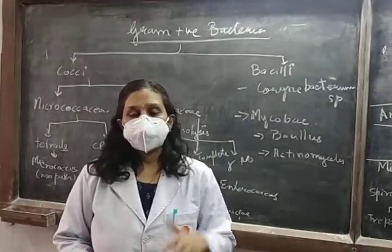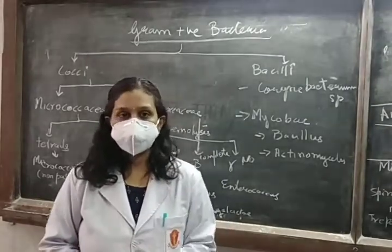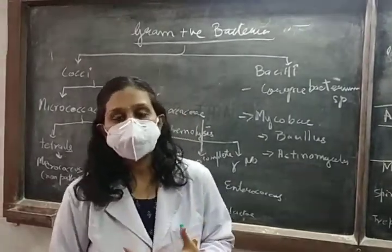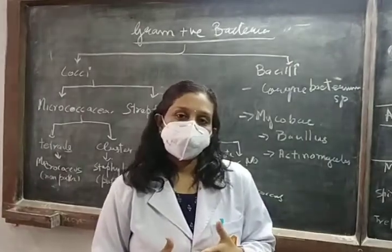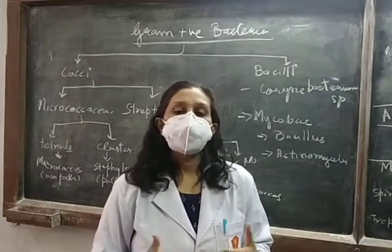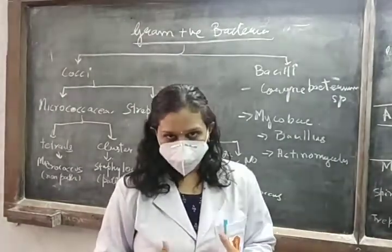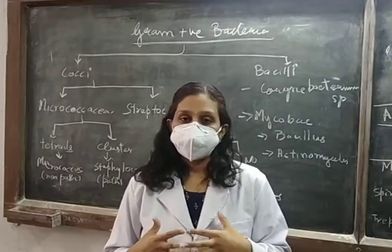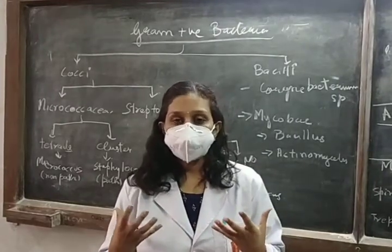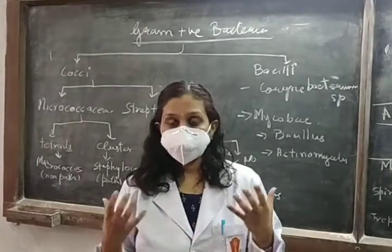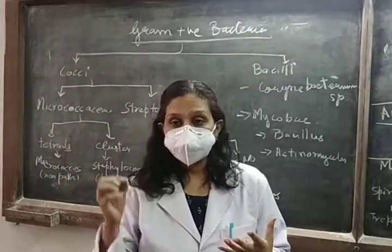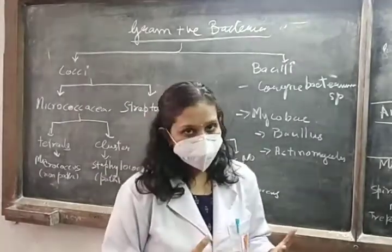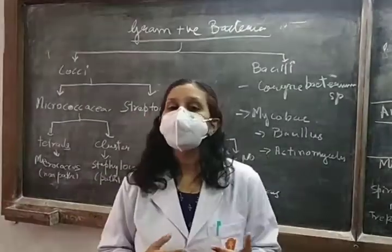Coming to gram-positive bacteria: in a picture when you see gram staining, the gram-positive organisms will be purple or blue in colour. They will have a peculiar pictorial presentation of clusters or chains, and they will be blue in colour.